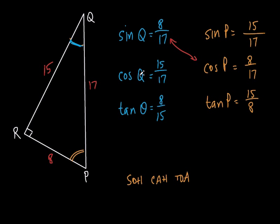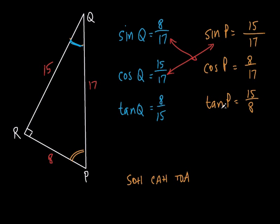Now let's use this to find something missing on the triangle. Here's the example we've been building toward. This time we're trying to solve for X — the length of that side. If you didn't know your trig functions, this is not a special triangle, and we can't do the Pythagorean theorem because we only know one side. But now with trig functions, we can actually do it.